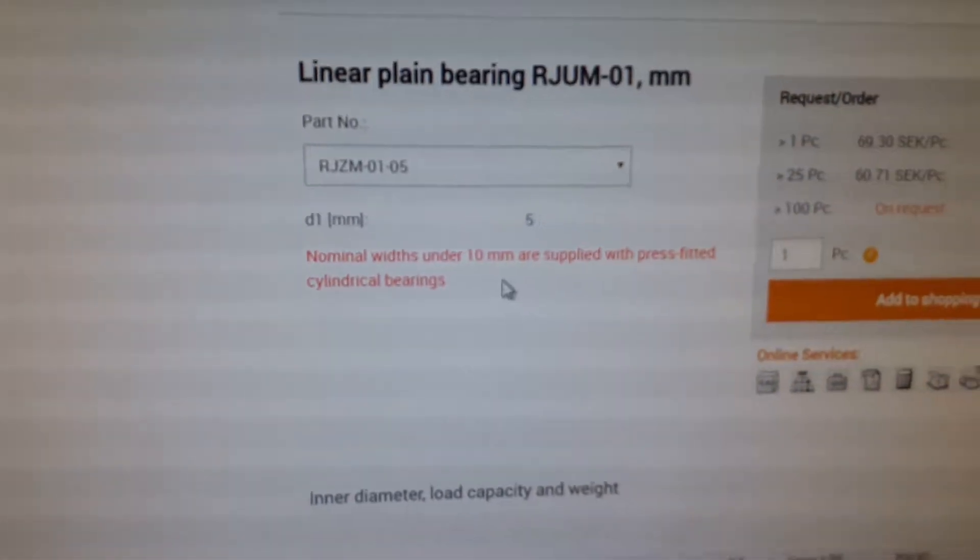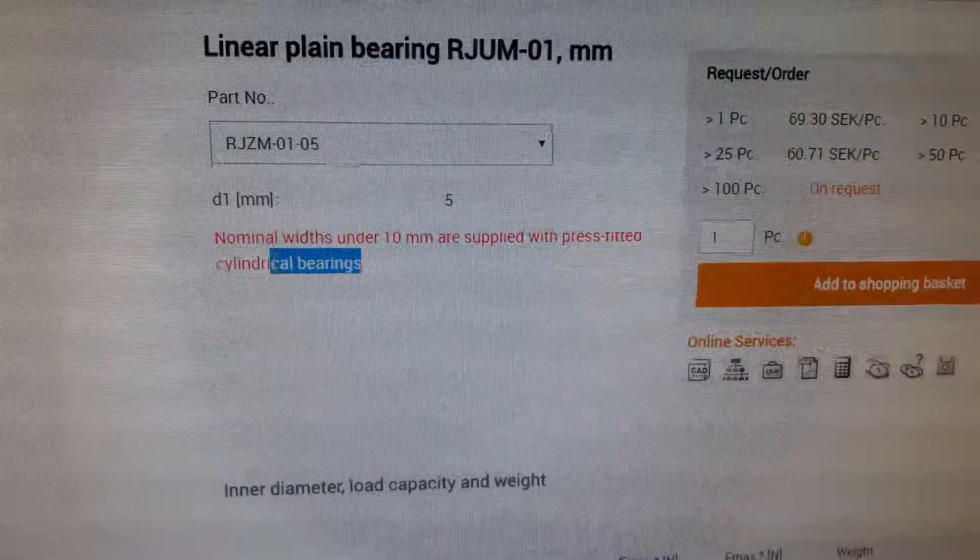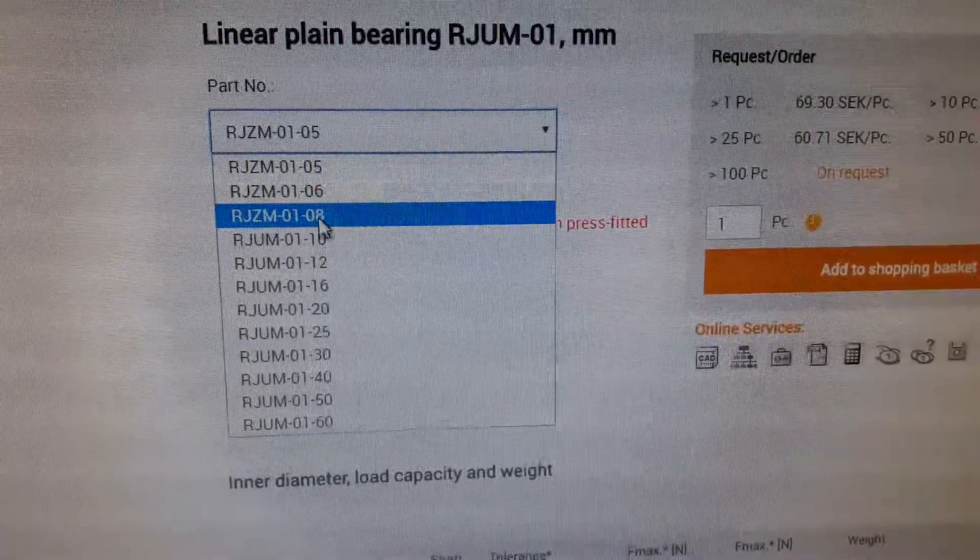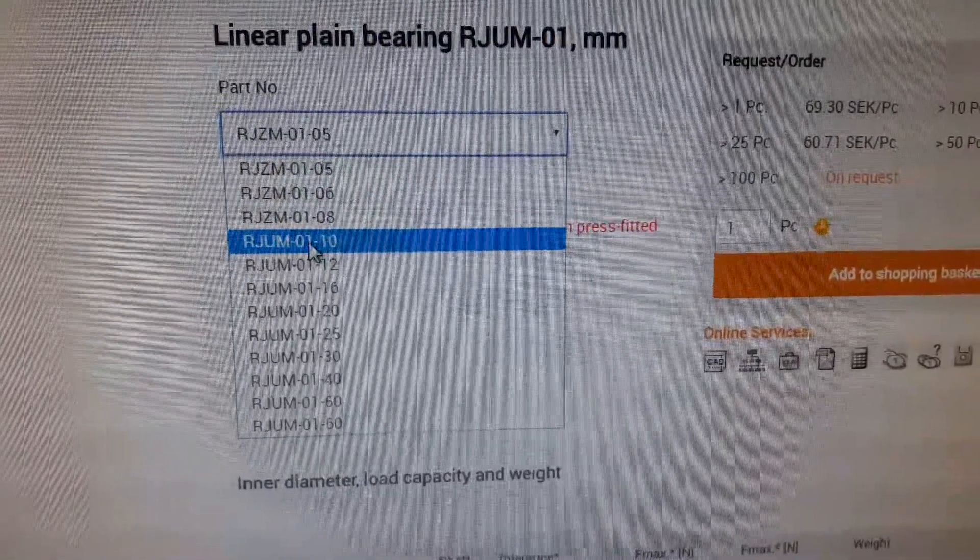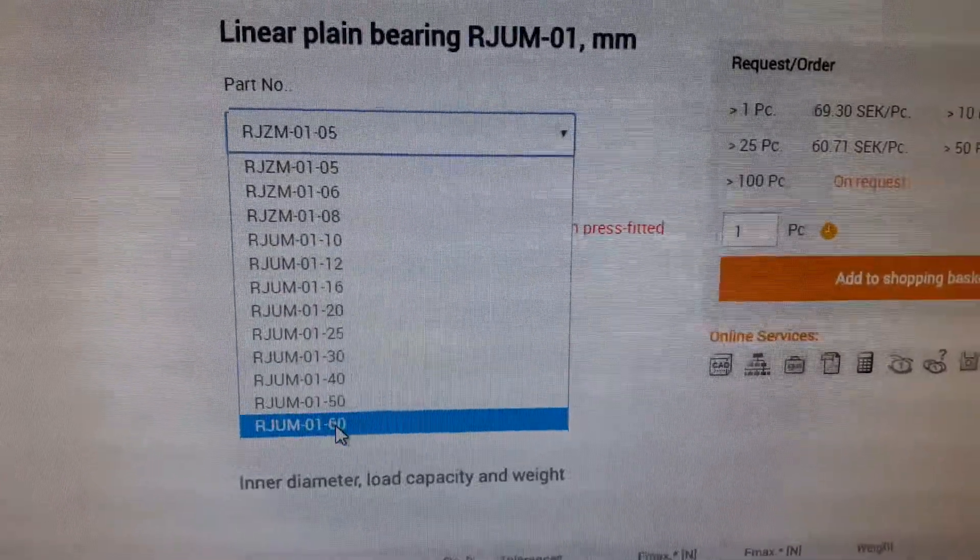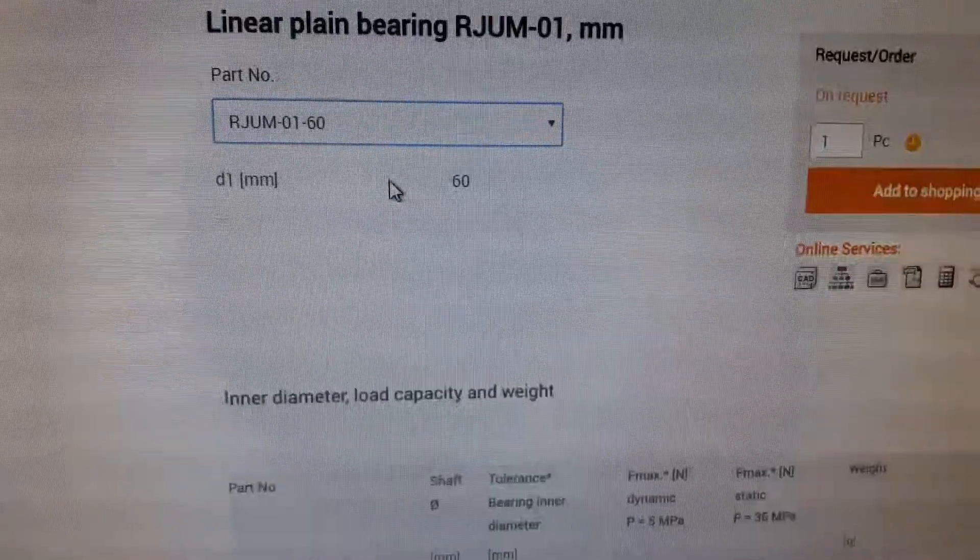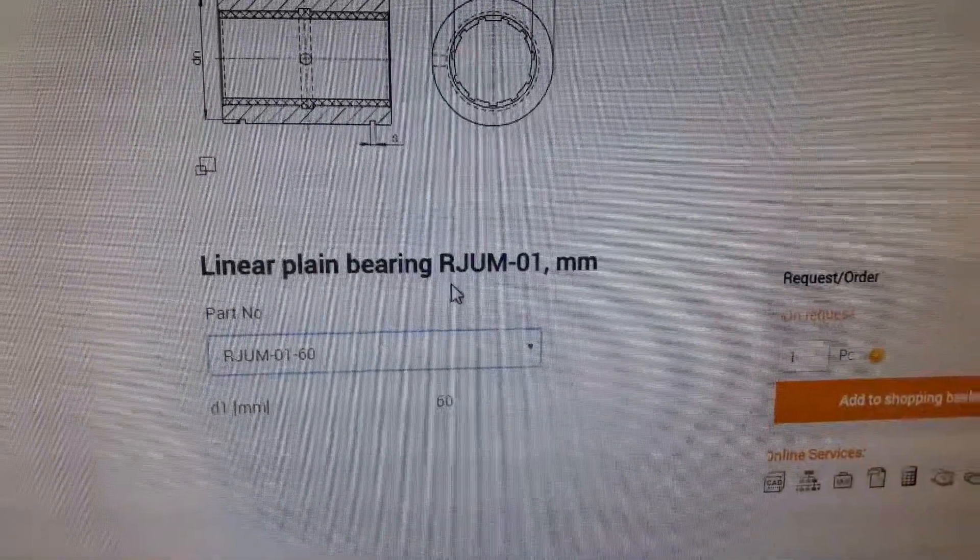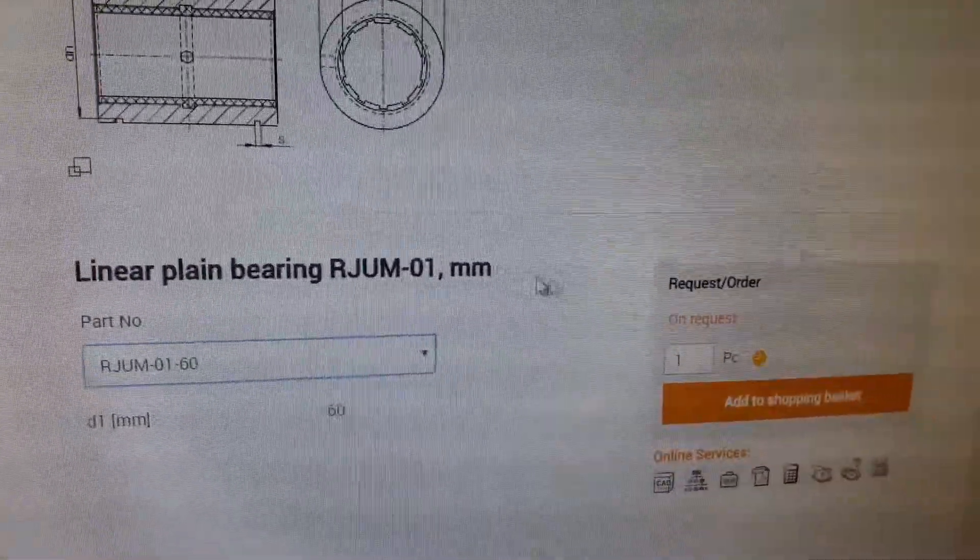Under 10 millimeters, so supplied with press fit cylindrical bearings. So you have a regular 8 millimeters, 10 and 12, which I use. I used to do 10 and 12 for my build. You can get up to 60 internal, so 6 millimeter rod - 6 centimeter rods.